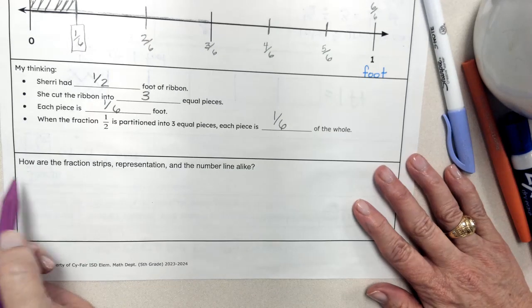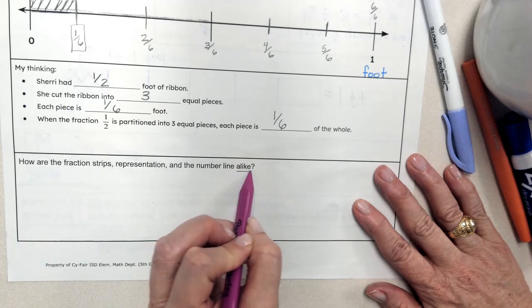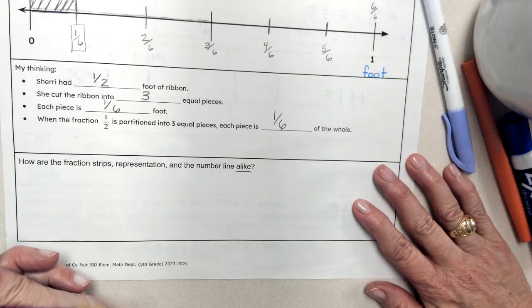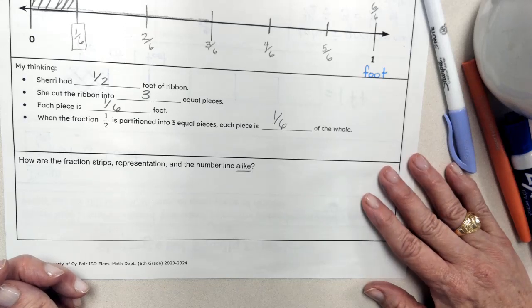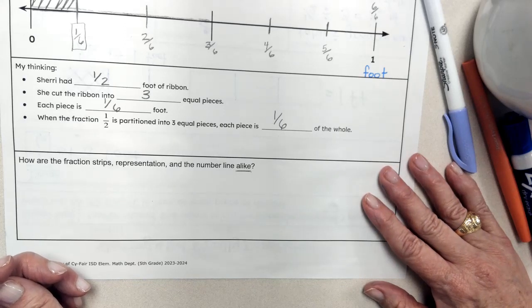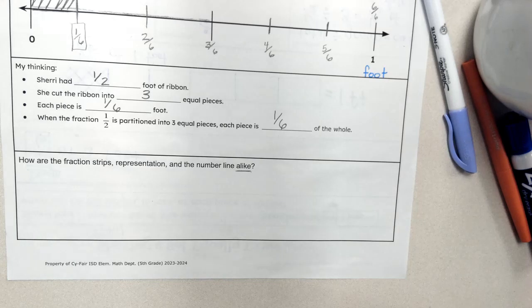So what are some things that you see that are alike? Right now, I want you to pause your video, and I want you to think about some things that are alike. Think about what did we do with the Play-Doh? What did we do with our representation picture? And what did we do with our number line? What are the things that you're seeing?